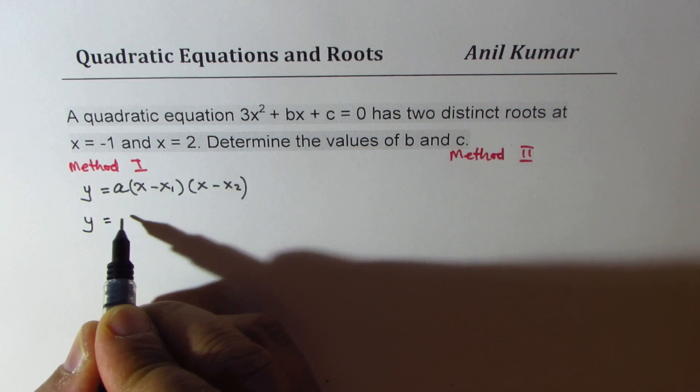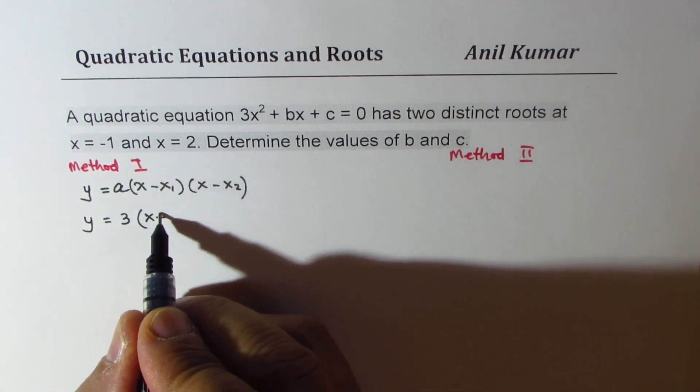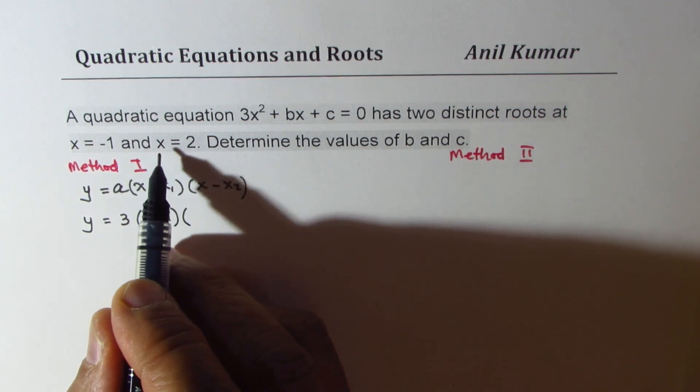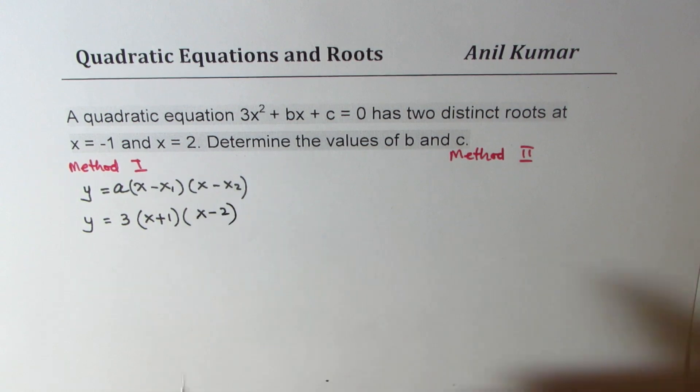So what we will do here is, we'll rewrite this function as 3 times x minus. First root is at minus 1, so it becomes plus 1 here. The second one is at 2, so we have x minus 2. So we get our equation.